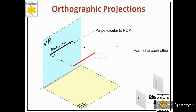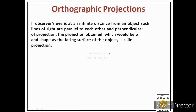Such projections are known as orthographic projections. We now get the same shape and size of the object as faced by the observer. To achieve parallel projectors, one important condition is that the distance between the object and the observer should be infinite. The distance is considered infinite if it is very large compared to the size of the object.